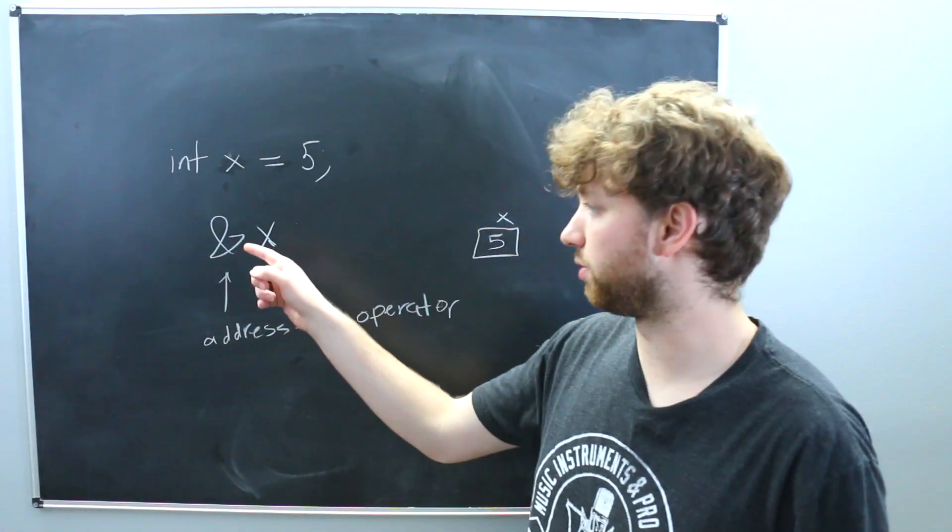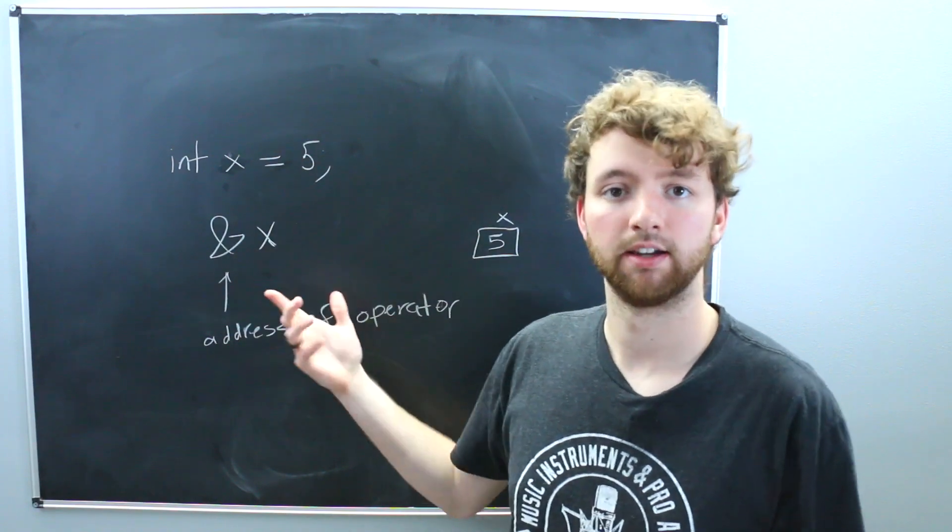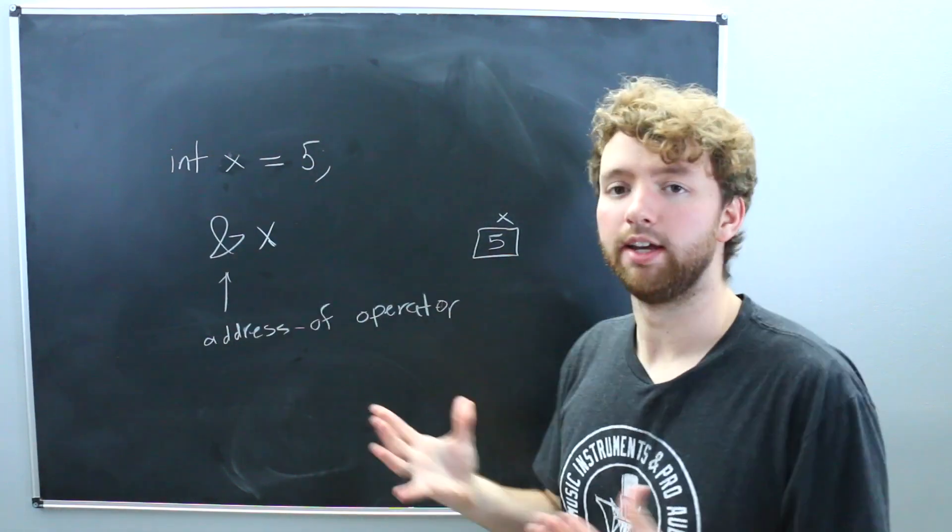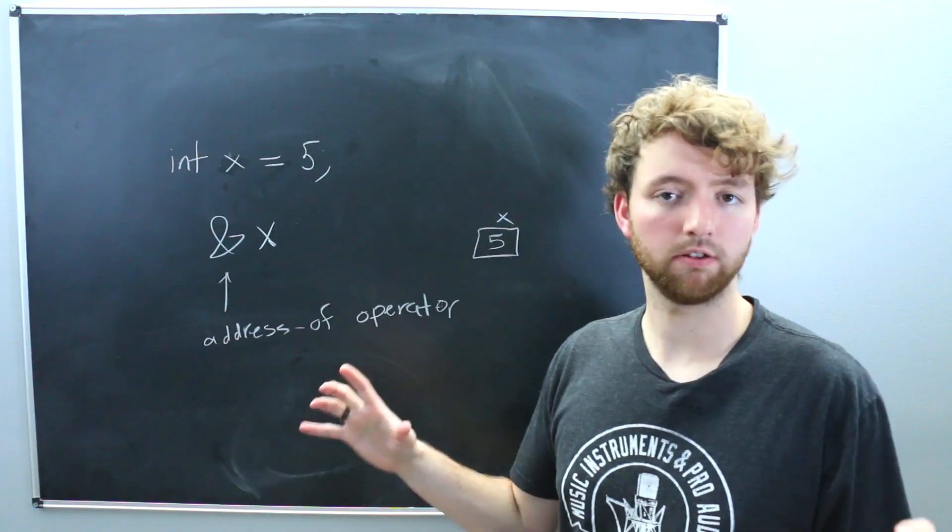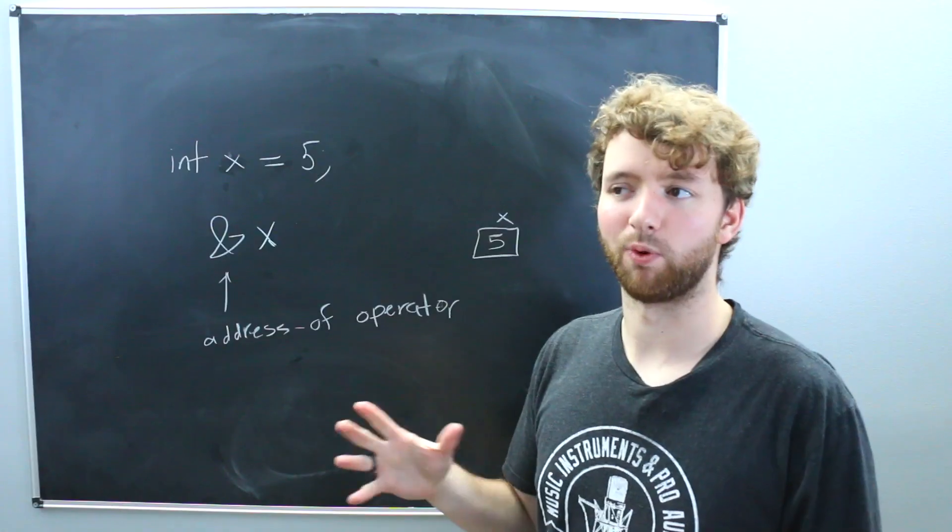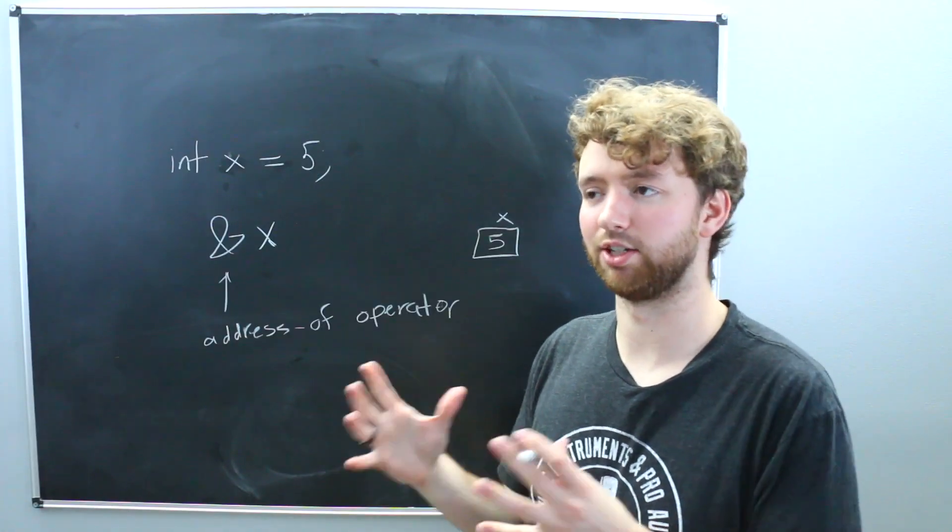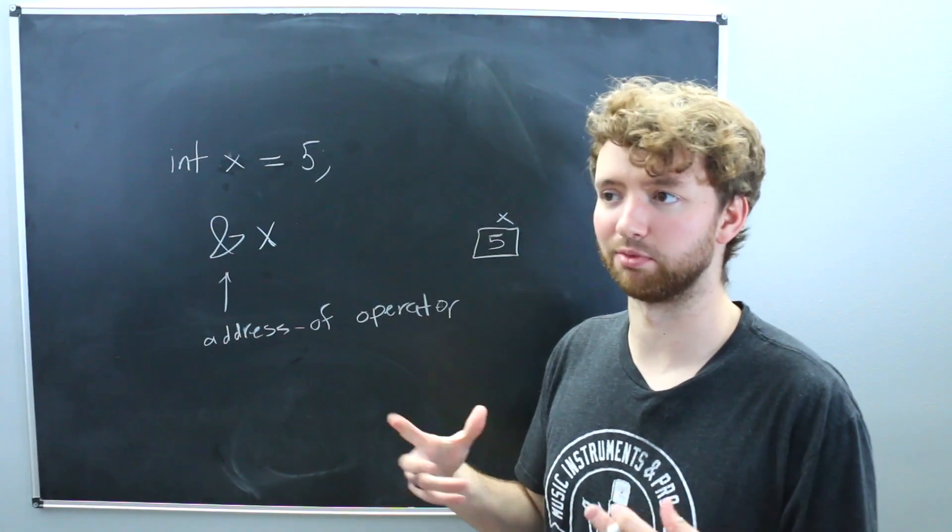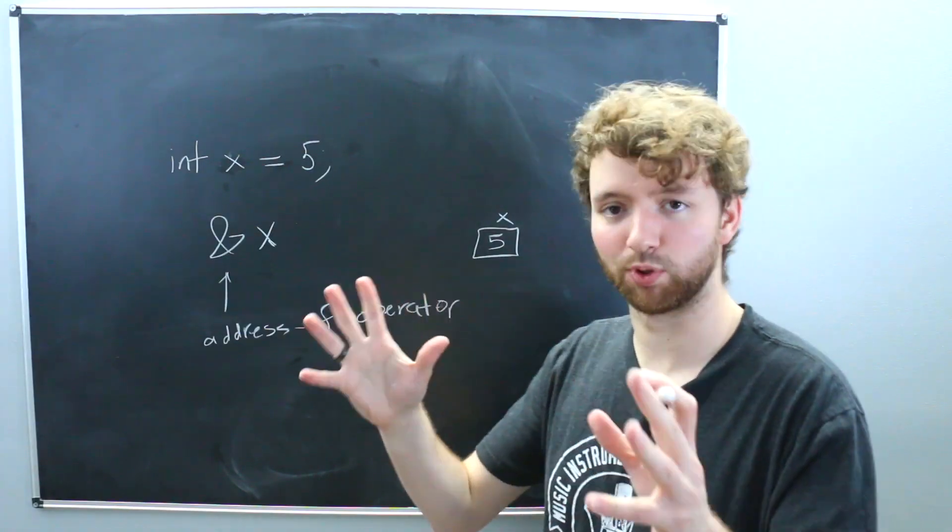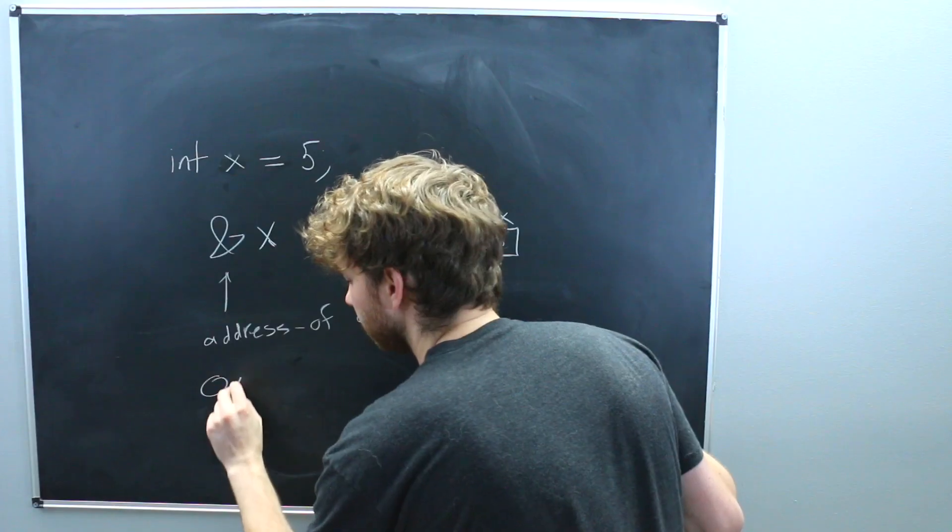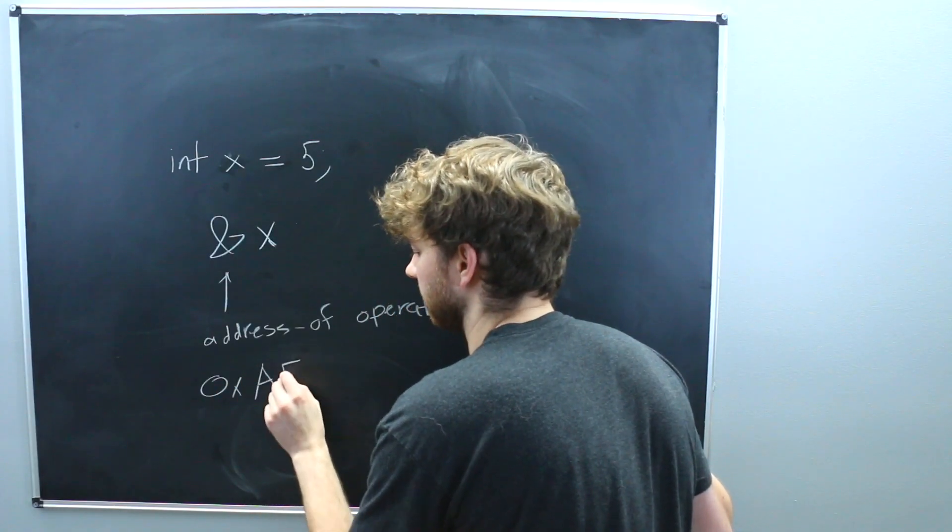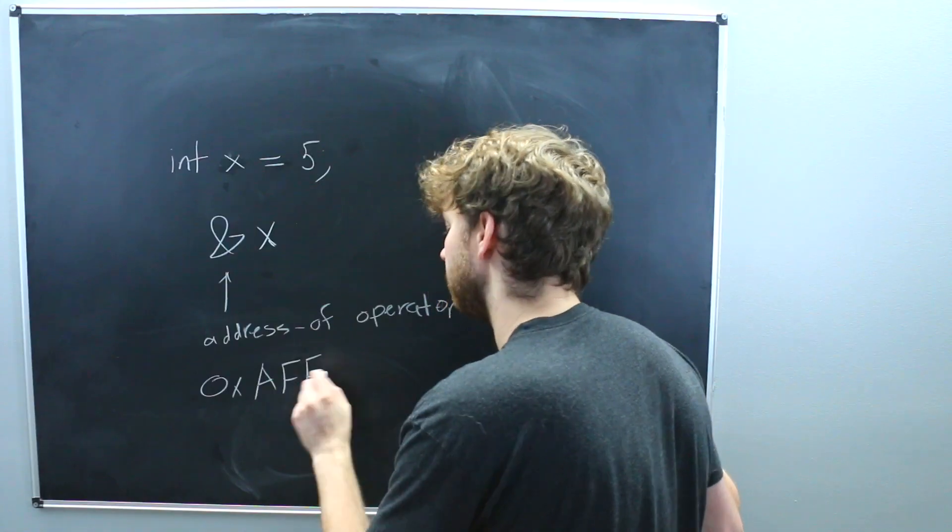So basically, when you read this, you would say address of x. What does that mean? Well, it's actually going to get the memory address, and it's going to probably be like 12 hexadecimal digits. I don't know why people say that, because digits implies base 10, but hexadecimal is like base 16. So hexadecimal numbers. So you're going to probably have 12 of those. So it might look something like this. I'm just making this up. So these numbers aren't significant.